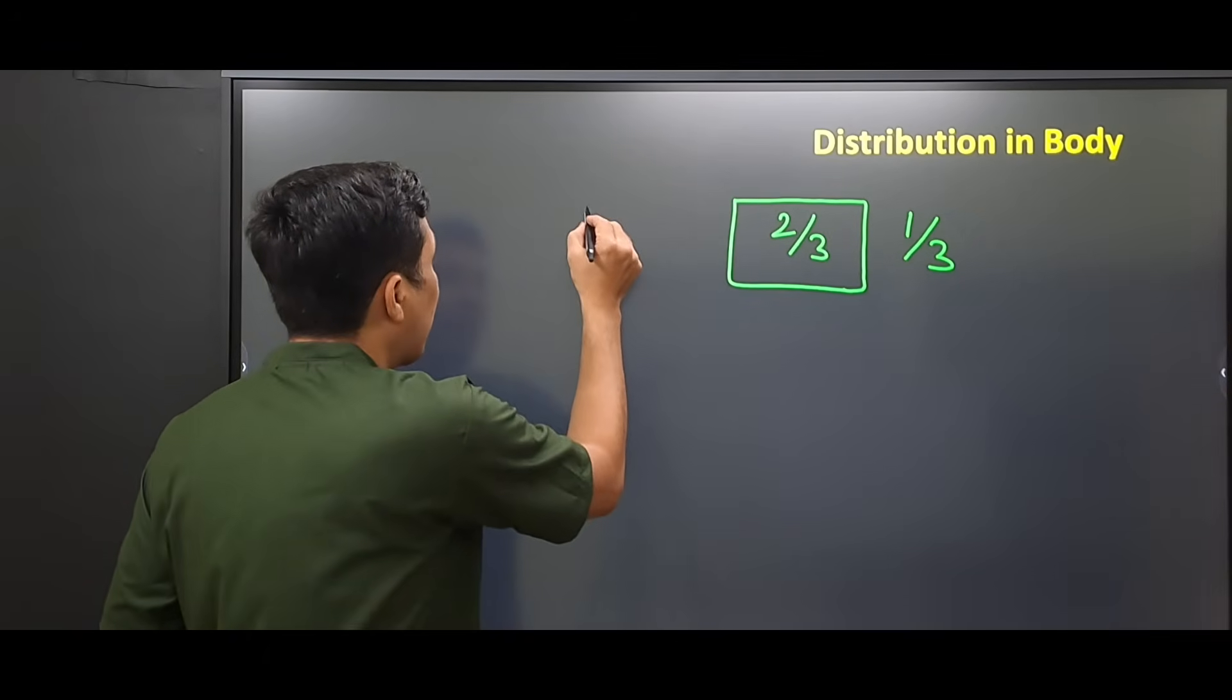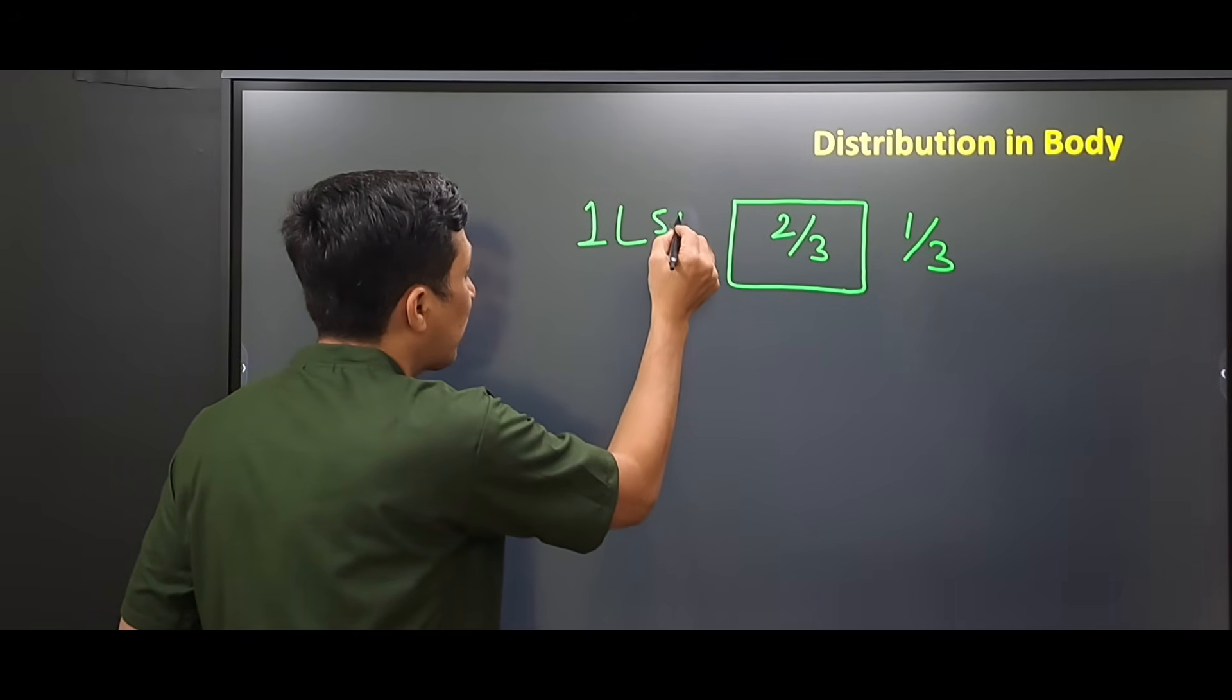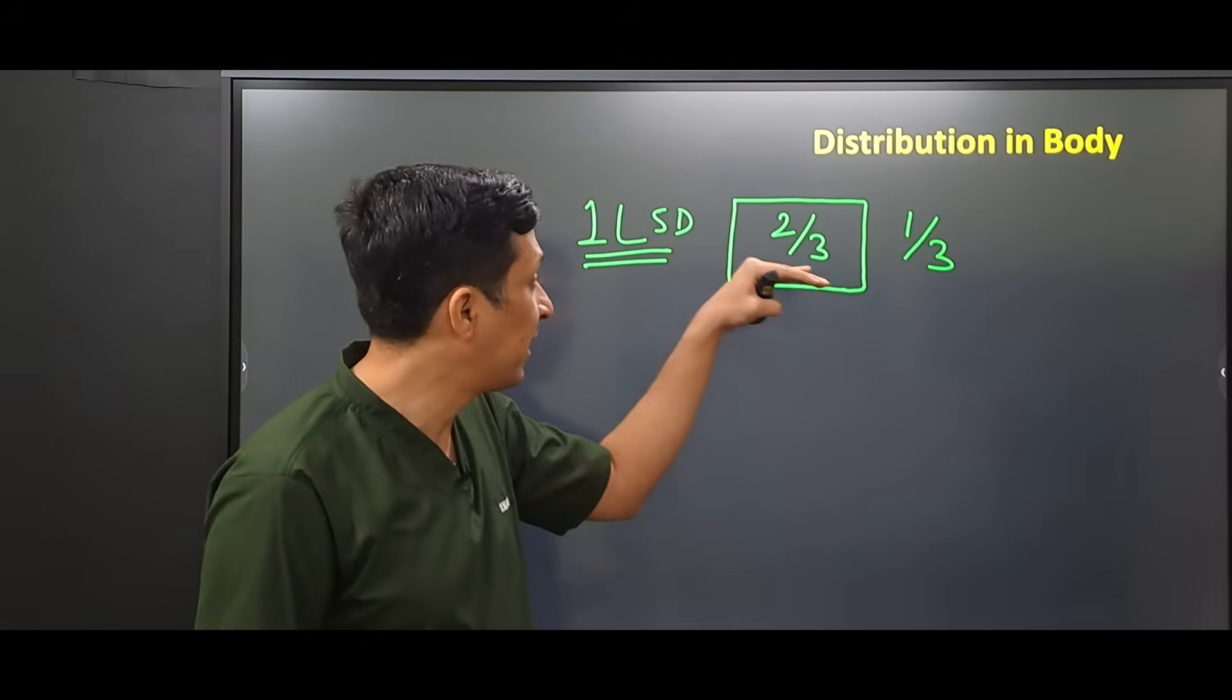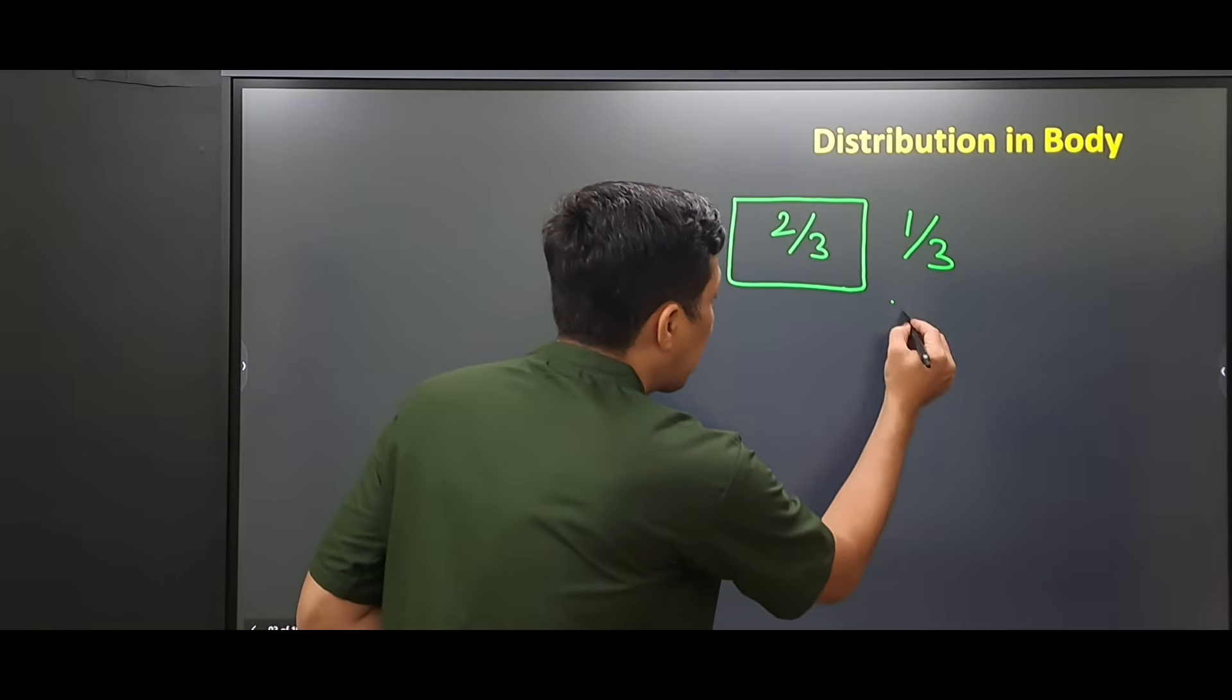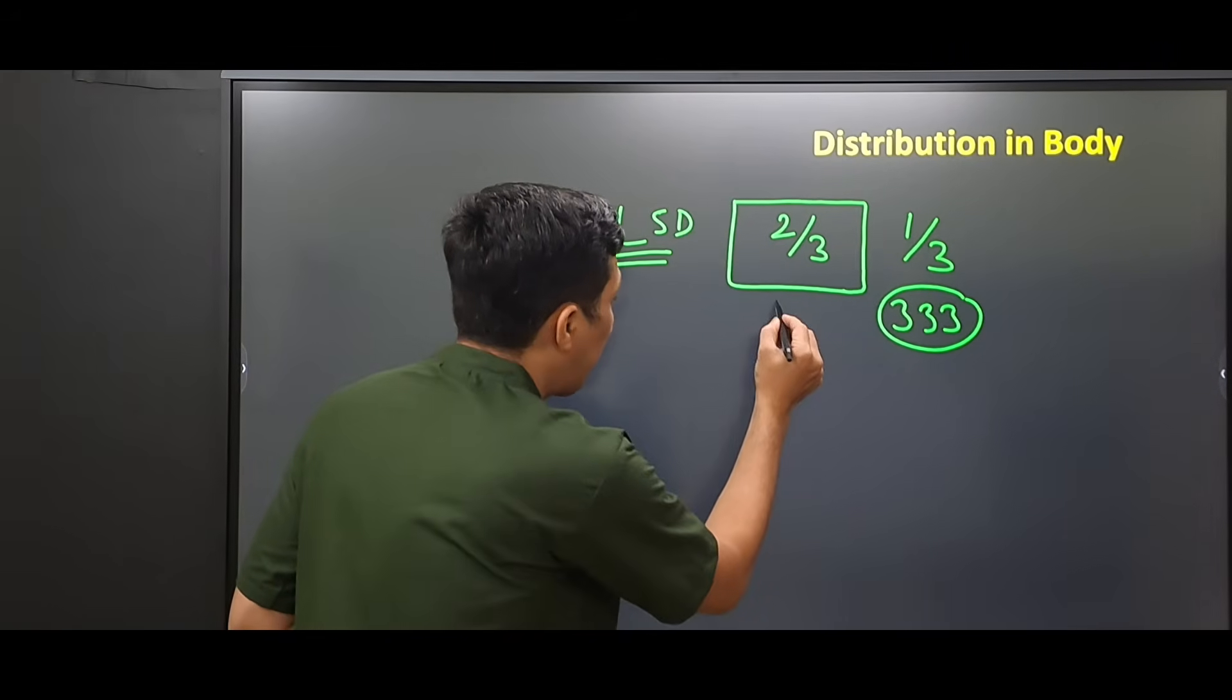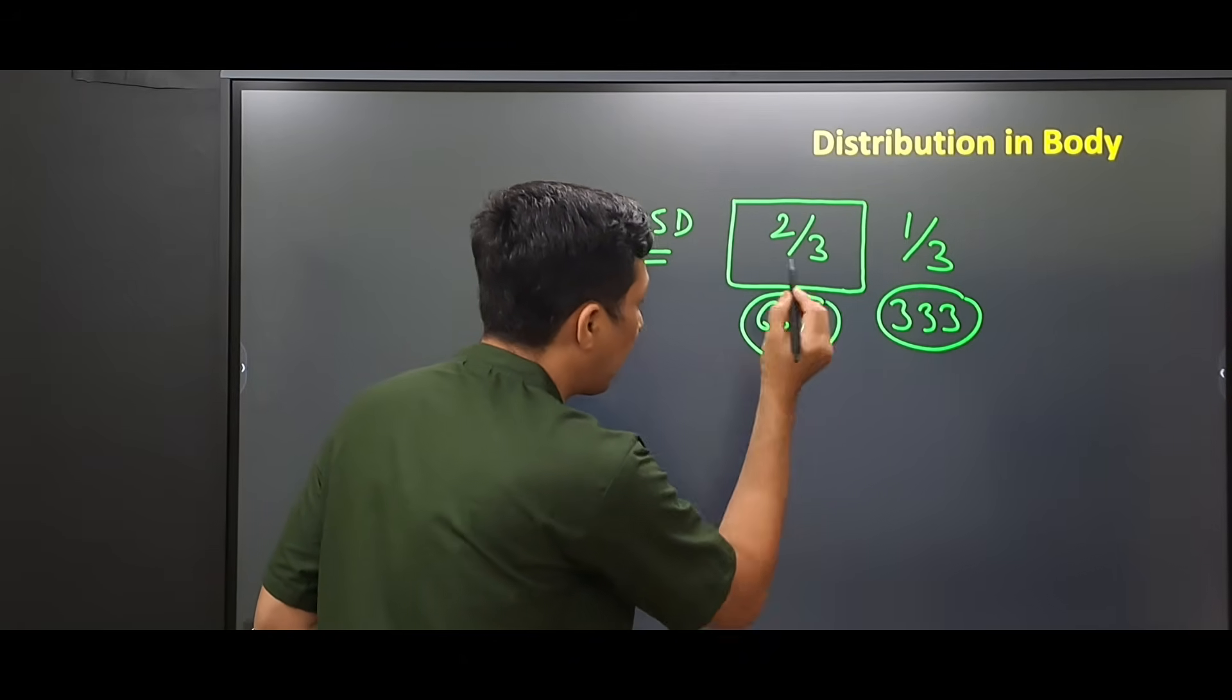So when 1 liter of dextrose 5% is given to the patient, this 1 liter is distributed exactly in this same proportion in the body. About 333 ml will go to the extracellular compartment and about 667 ml will go to the intracellular compartment.